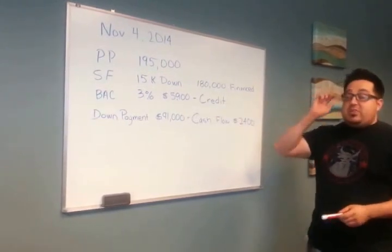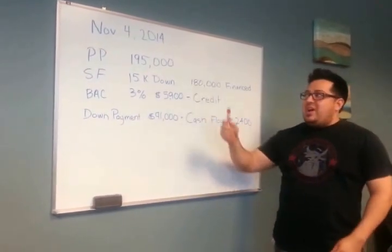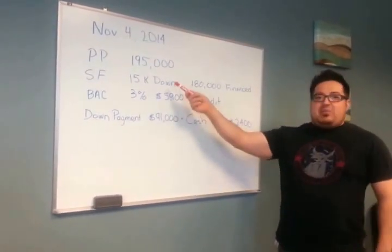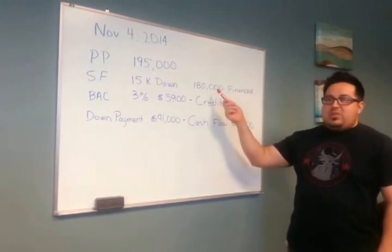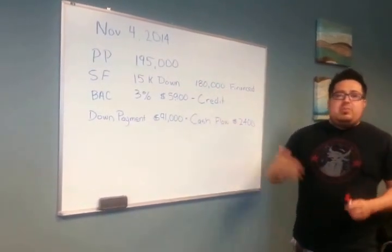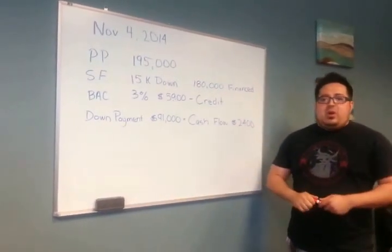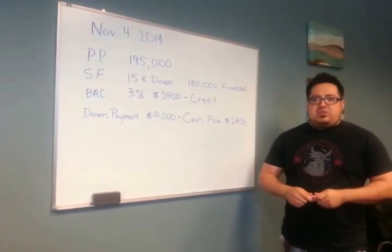The seller wants $15,000 down, which is the equivalent of an underlying mortgage of $180,000. So the purchase price is $195,000, down payment $15,000, underlying mortgage of $180,000. You can buy this way with an all-inclusive deed of trust or subject-to financing.